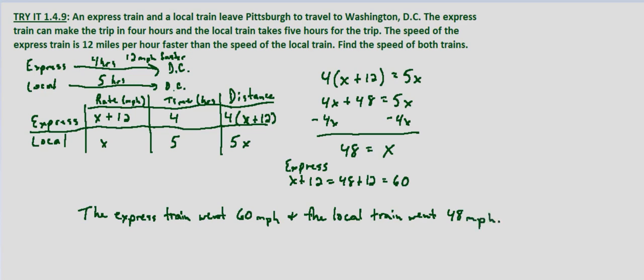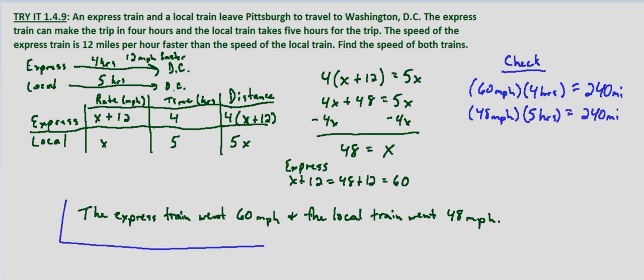Now how do we check this? Let's make sure they both end up with the same distance. So for the express train 60 miles per hour times 4 hours equals 240 miles. And for the local train 48 miles per hour times 5 hours equals the same 240 miles. So that verifies that we found the correct speeds and that the speed of the express train is 60 miles per hour and that of the local train was 48 miles per hour.